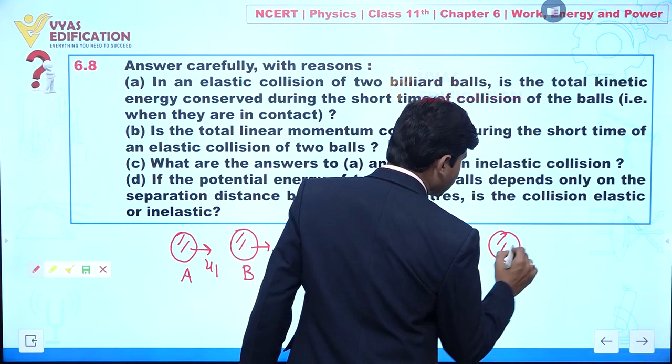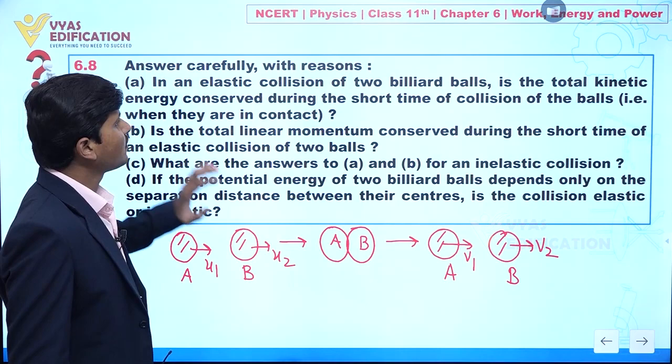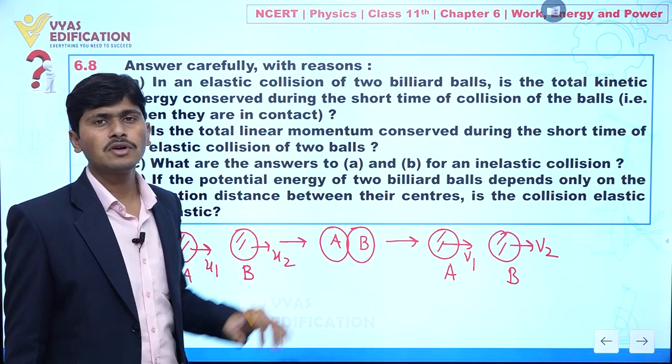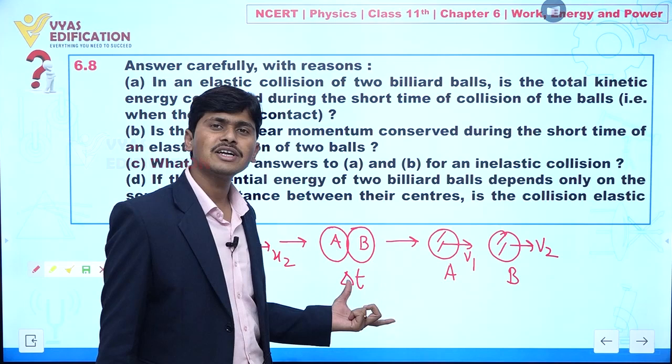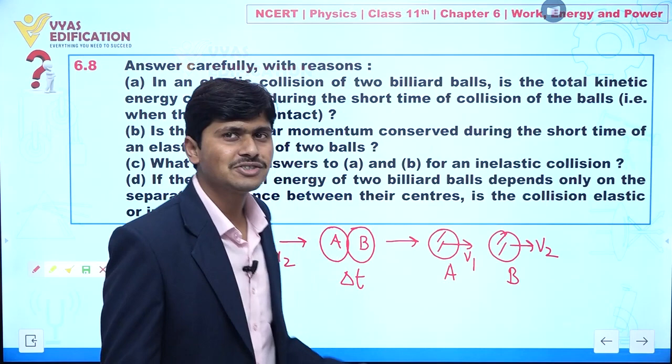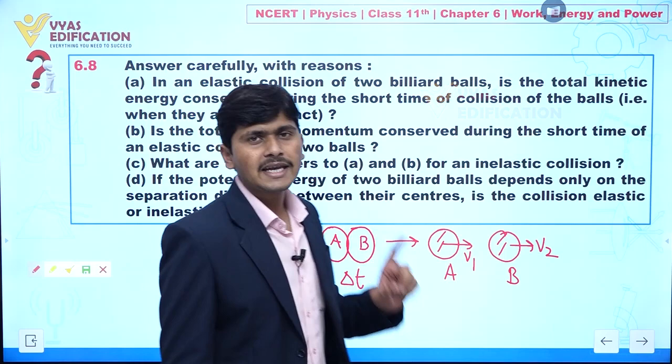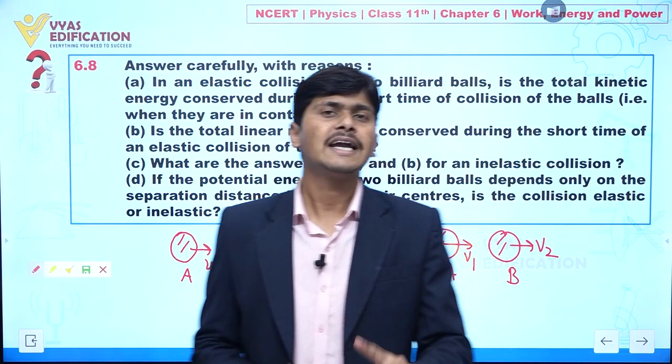In statement A, it asks about total kinetic energy conserved during the short time of collision. When two billiard balls collide, the time taken is delta T — a very short interval of time. Always keep in mind: kinetic energy of a system before collision and after collision remains the same. That is absolutely correct.